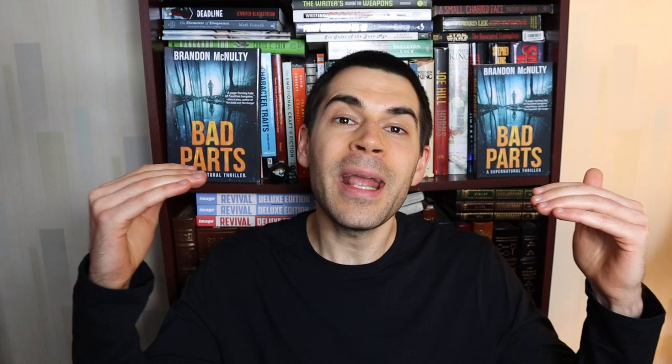Today I want to talk about the subject of pinch points. What these are — they are two plot points, two moments that happen in the middle of your story, usually around the 38% mark and the 62% mark. What they do is raise the stakes a little bit and remind us that the villain is still a threat.